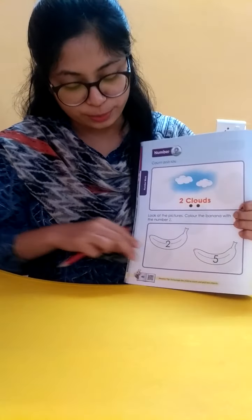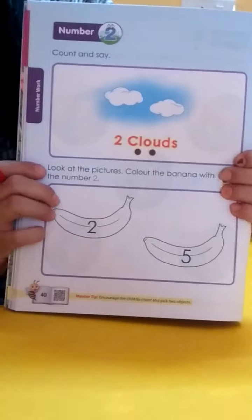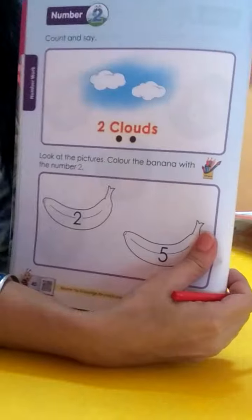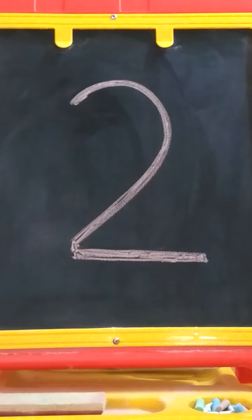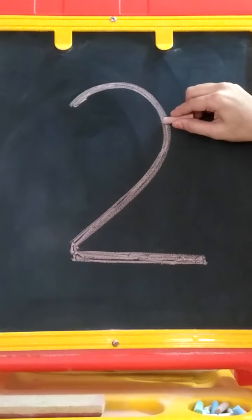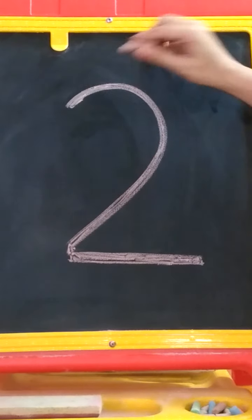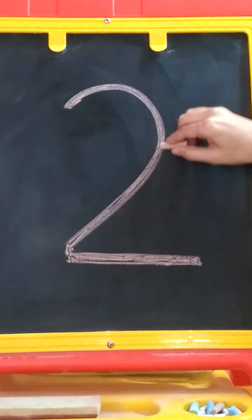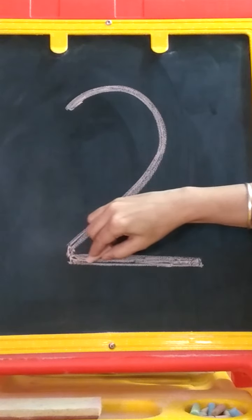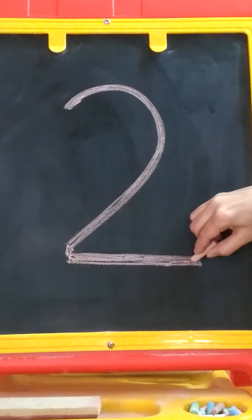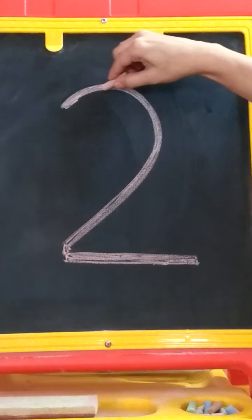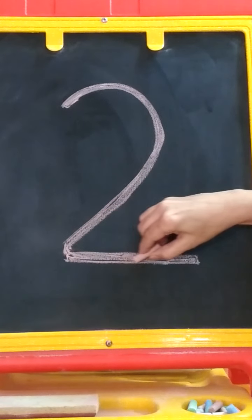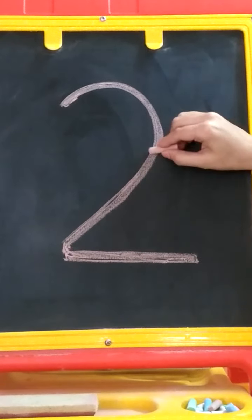Okay, page number 4040, Tinker Book 2. See, this is figure 2. First one curve, then a slanting line, and then one sleeping line. Again: curve, slanting line, sleeping line. So this is figure 2.